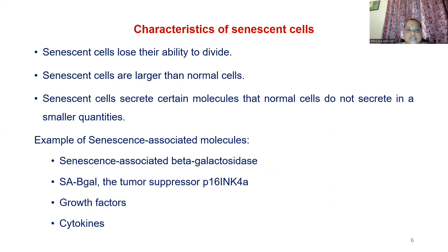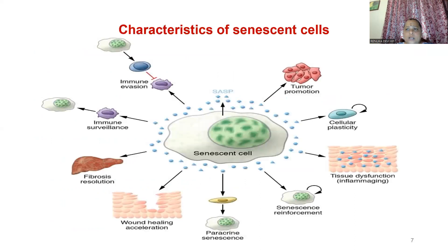The characteristics of senescent cells: they lose their ability to divide and the cells are larger than normal cells. Certain molecules that are secreted in normal cells are not secreted, even in smaller quantities. Examples include senescence-associated beta-galactosidase, tumor suppressor cells, and growth factors. These also involve immune response and how it is reinforced with tumor promotion or inflammation.